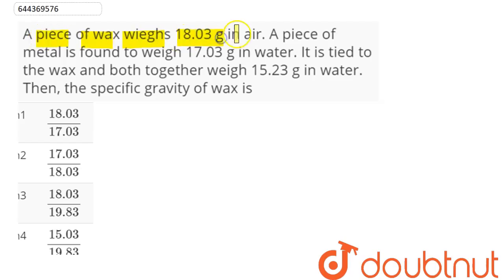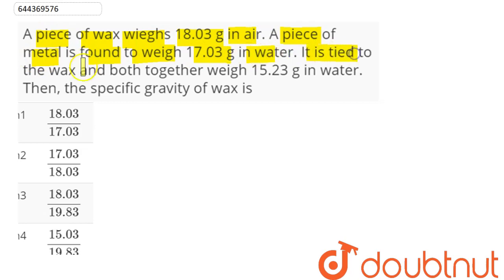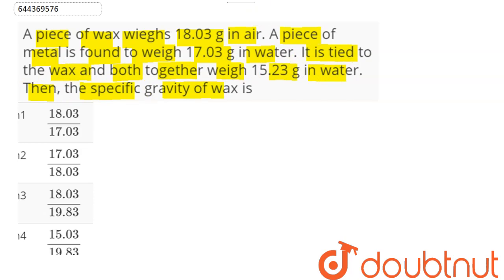The question is: a piece of wax weighs 18.03 grams in air. A piece of metal is found to weigh 17.03 grams in water. It is tied to the wax and both together weigh 15.23 grams in water. Find the specific gravity of the wax.